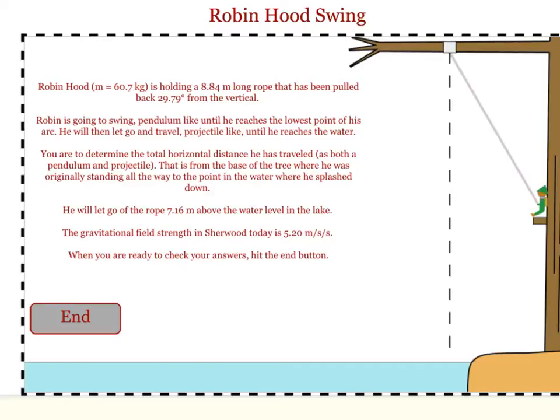So you want to do a two-part problem. The first part, you have to figure out how fast he will be going when he is done moving like a pendulum. And for this part, you want to take the length of the rope, the angle the rope makes with the vertical, and use them to find the y and x components of this triangle.